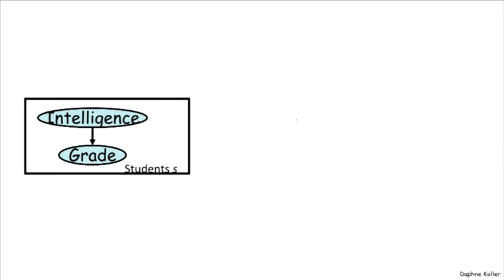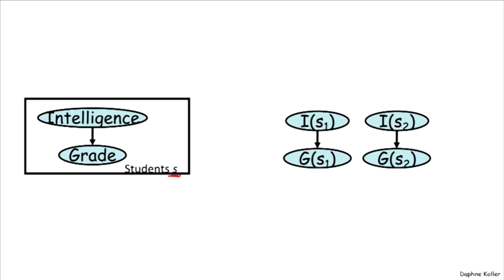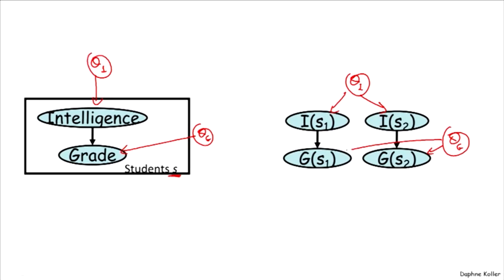Let's look at a slightly more interesting example, going back to our university with multiple students. We now have a two-variable model with intelligence and grade, indexed by different students S, which indicates a repetition — a copying of this template model. In this case, I only made two copies, one for student one and one for student two. If we encode dependence on parameters, we might have theta_i representing the CPD for intelligence, and theta_g representing the CPD for grade. Theta_i and theta_g are outside of the plate.